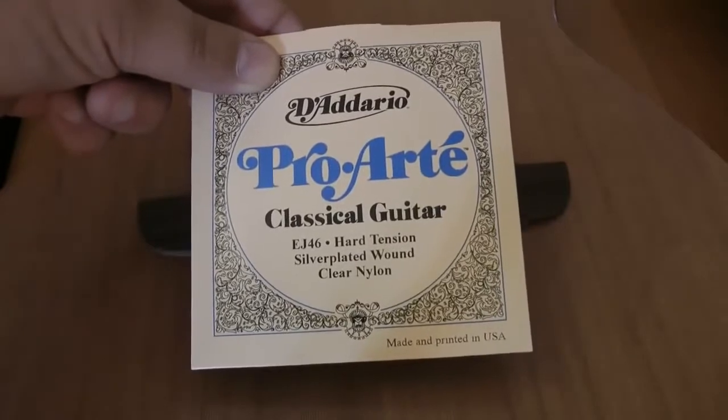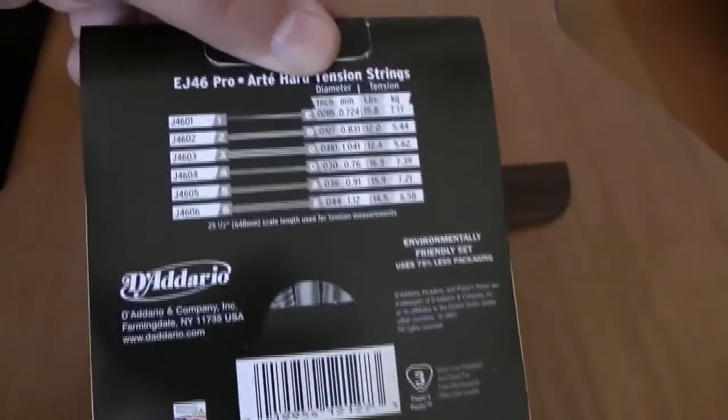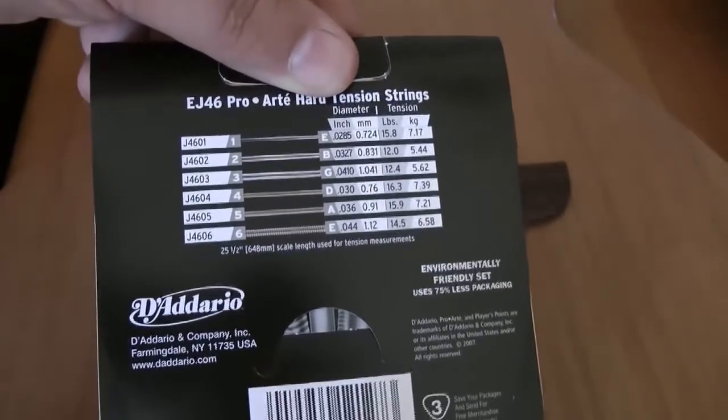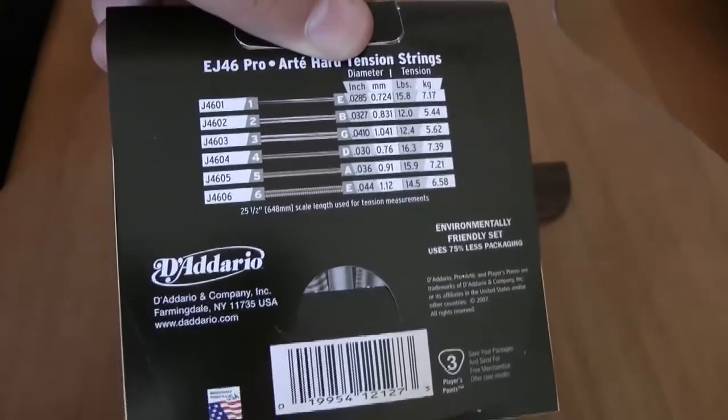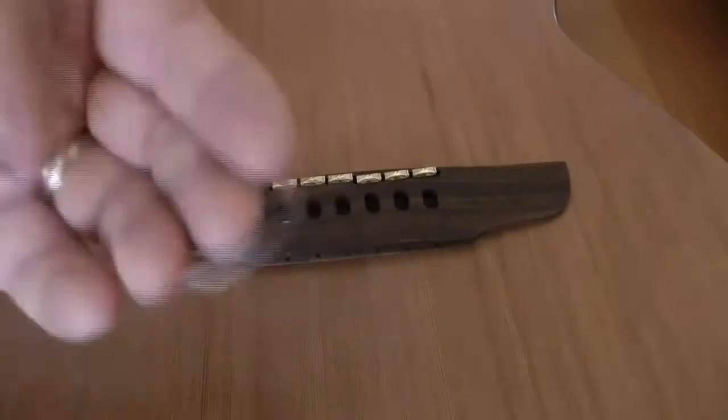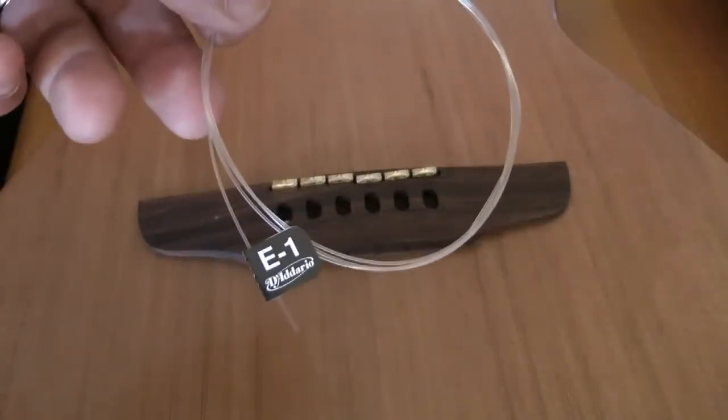In this video I will be replacing the strings on my Godan Multiac nylon guitar and I will be using a set of Daddario ProArt classical guitar strings, reference number EJ46, hard tensioned, silver plated wounding, clear nylon. Nylon guitar strings are not strung the same way that a conventional steel string guitar is strung. You have to get it a little bit down and dirty with the strings themselves.